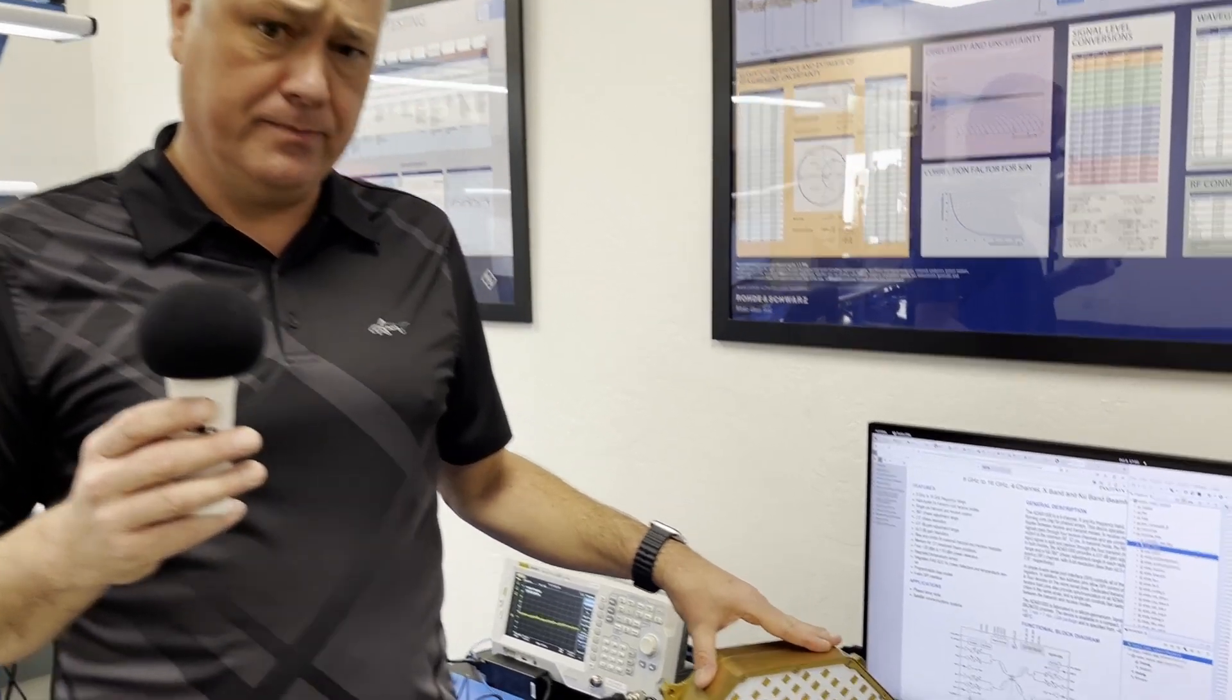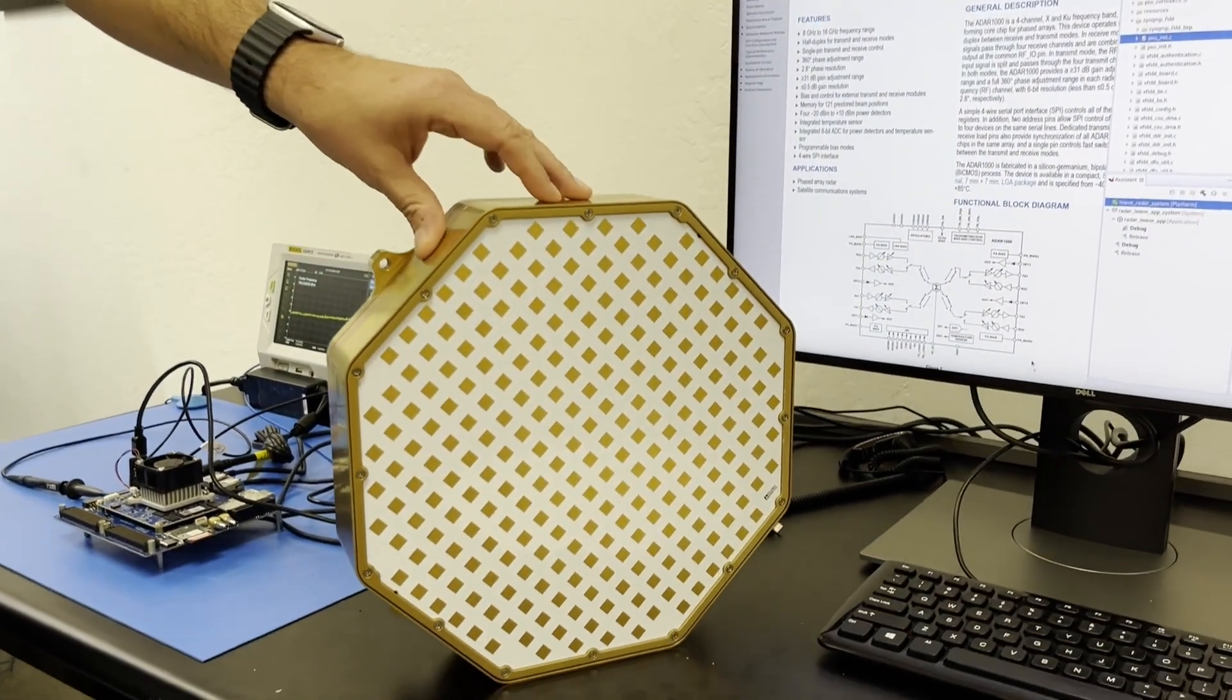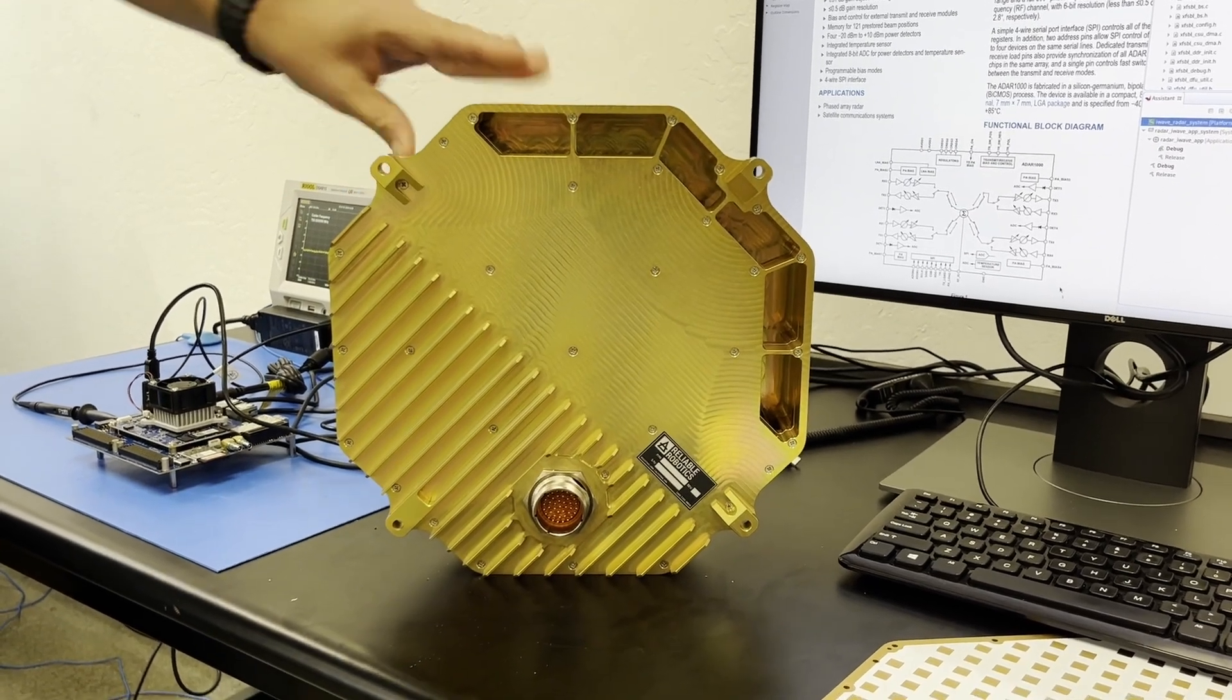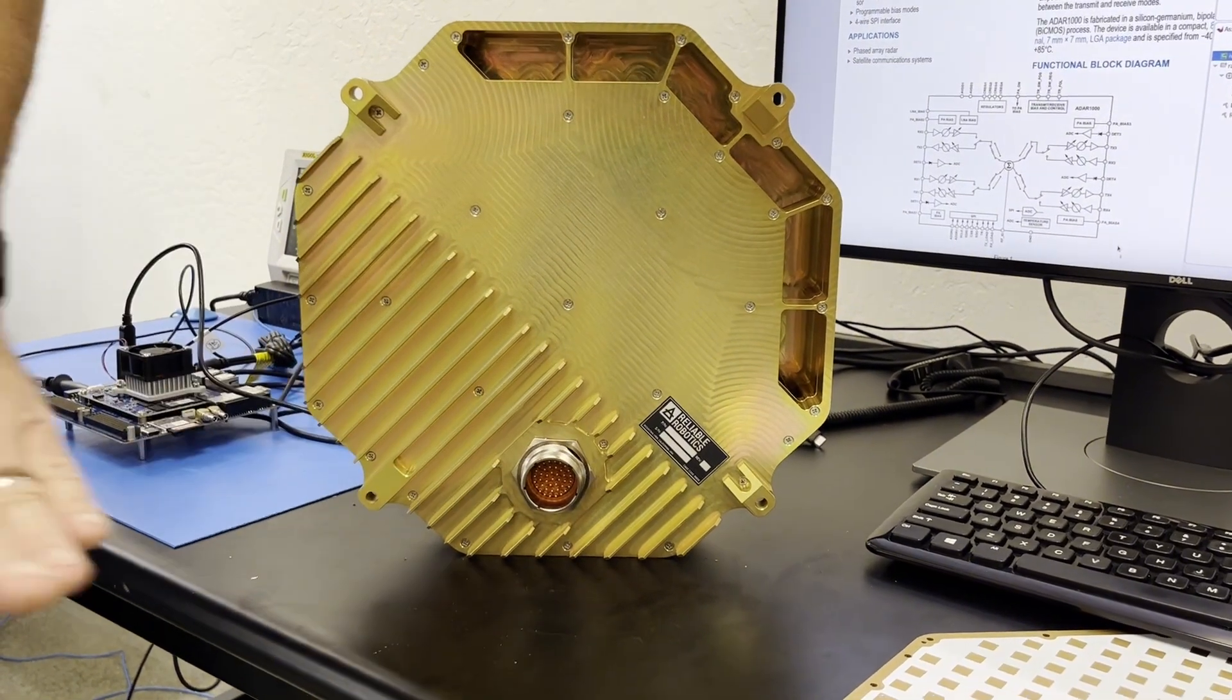In order to do this, we need a radar system. So here at Reliable Robotics, we are developing a radar system from the ground up. What you see here houses everything—there's DC power in and data out.